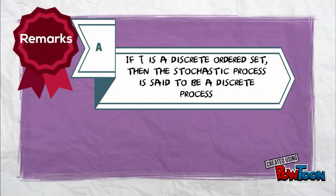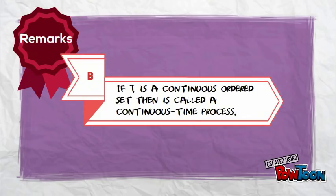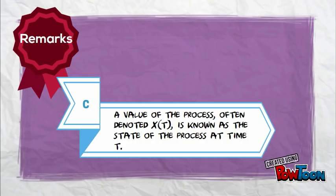Remarks: A) if T is a discrete ordered set, then the stochastic process is said to be a discrete process. B) if T is a continuous ordered set, then it is called a continuous time process. C) a value of the process, often denoted at time T, is known as the state of the process at time T.